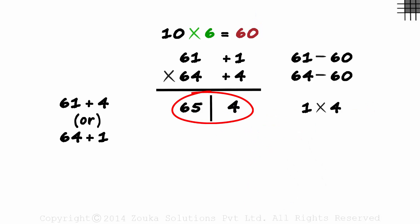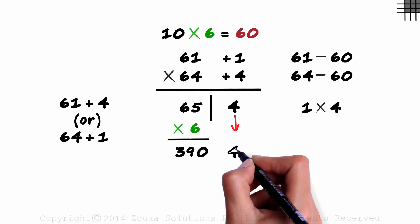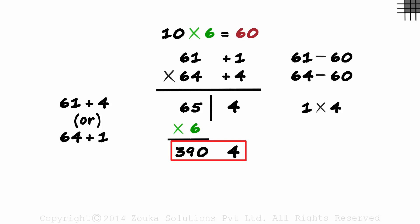Is 654 our answer? Nope. That's where an additional step comes in. We have to multiply the number on the left with this multiplying factor. Here it's 6. So we multiply 65 with 6 and 65 times 6 gives us 390. And we get the 4 down. That's our answer. 61 times 64 is 3904.